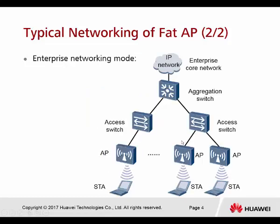In enterprise networking mode, they're using the aggregation switch, access switch, and also many FAT APs. When they have so many FAT APs deployed in the enterprise network, they will have a lot of overhead. When you want to do troubleshooting or change the VLAN and the SSID, you might face some problems.